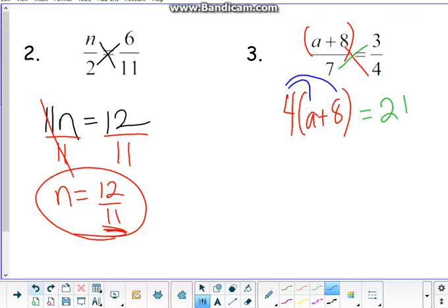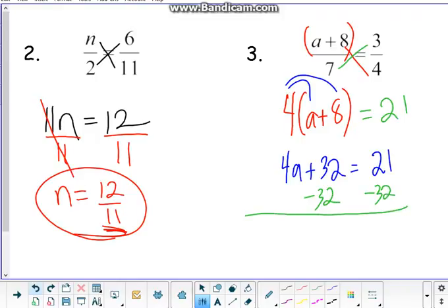So now, distribute through, and we get 4a plus 32 is going to equal 21. Subtract the 32 from both sides because we want to do order of operations in reverse when we are solving equations. So we take care of the addition first, not the multiplication. That goes away, and we have 4a equals negative 11.